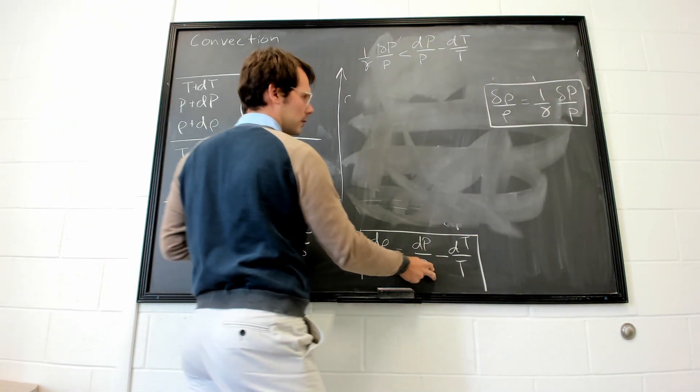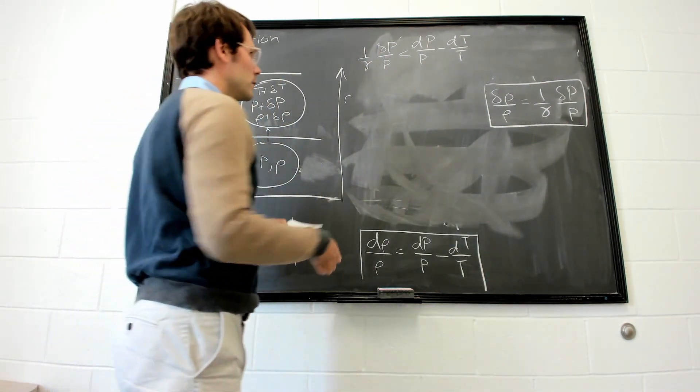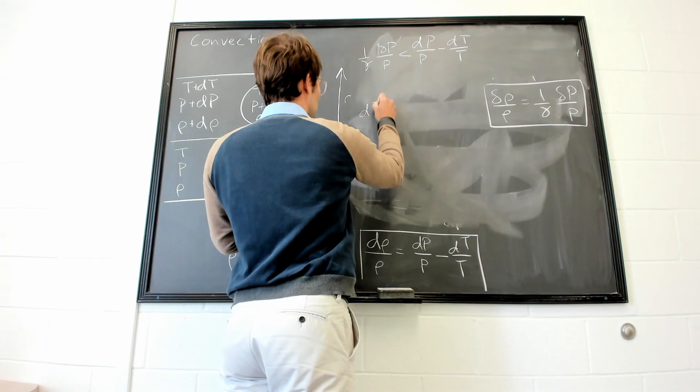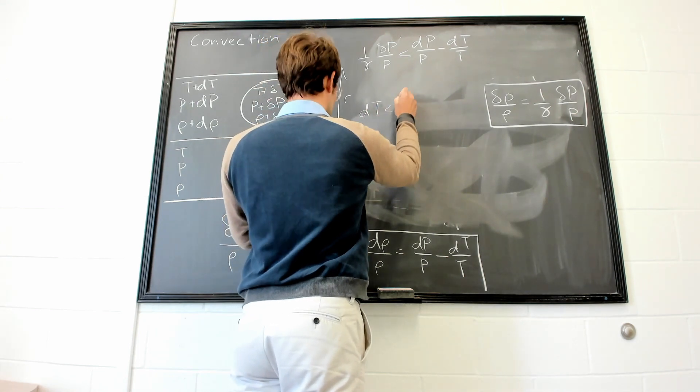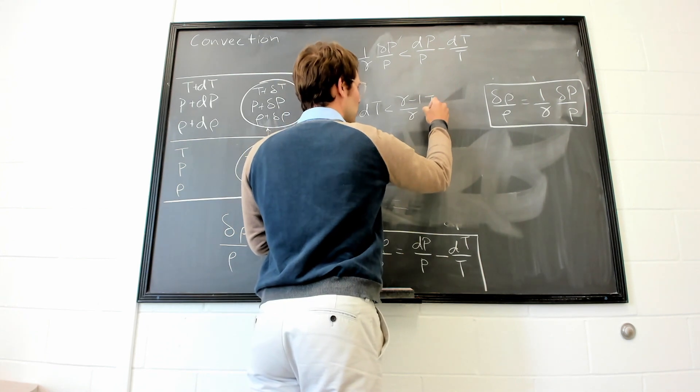All right, we've just taken this component and this component and replaced them here. You can do a little bit of rearranging. So we can get dT is less than gamma minus 1 over gamma, T over P, dP.